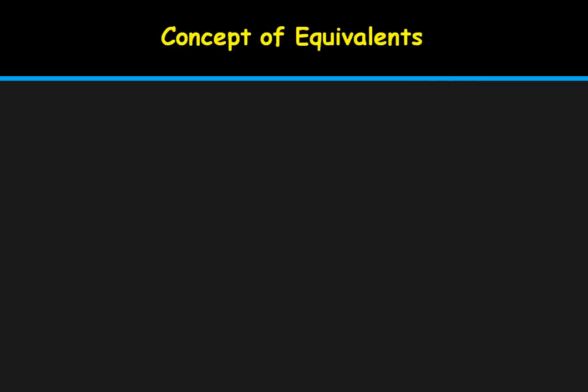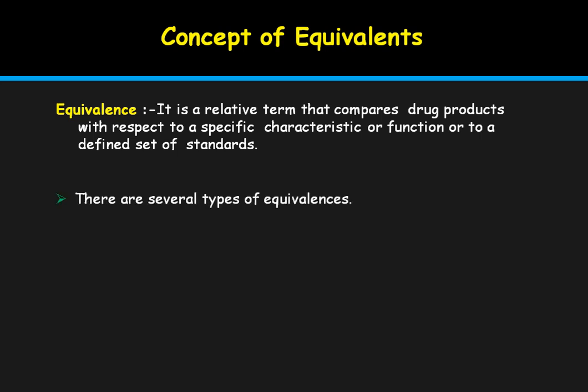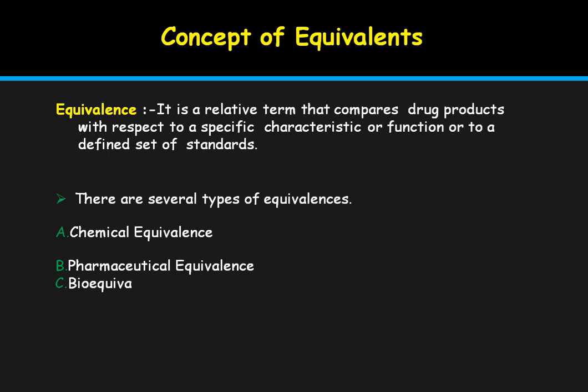The concept of equivalency: equivalency is a relative term that compares drug products with respect to a specific characteristic, function, or a defined set of standards. Here, the plasma concentration-time profile is the characteristic that must be equivalent across different dosage forms. There are several types of equivalencies: chemical equivalence, pharmaceutical equivalence, bioequivalence, and therapeutic equivalence.